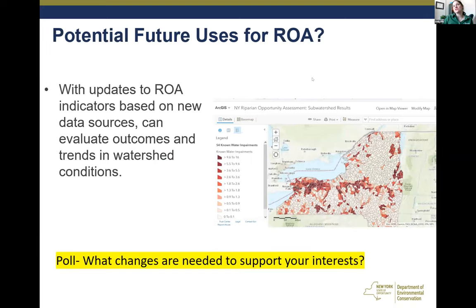Thinking about some potential future uses for the ROA — with updates to all the indicators, for example, the known water impairments were from before 2018, and we now have the 2022 draft water body impairments come out more recently with some changes to some of the waterways. We could see that kind of being updated as it becomes finalized. As other indicators have new data available and we're able to rerun the tool, it could potentially be used to evaluate trends over time between the conditions when the tool was developed in 2018 and whenever we're able to make an update.